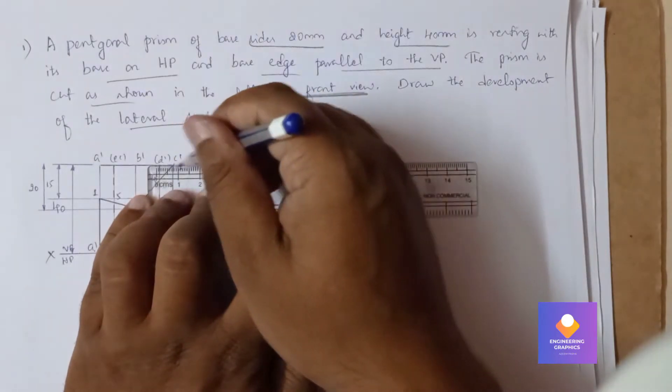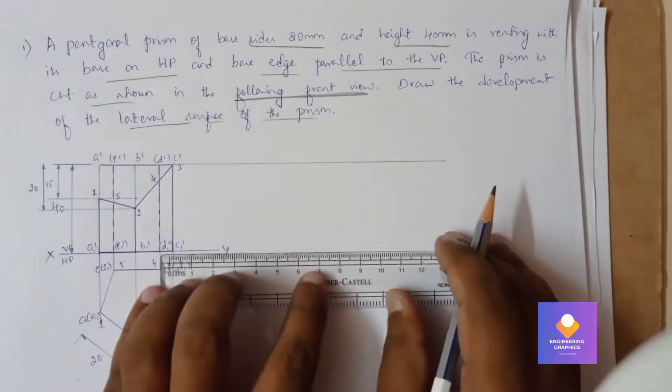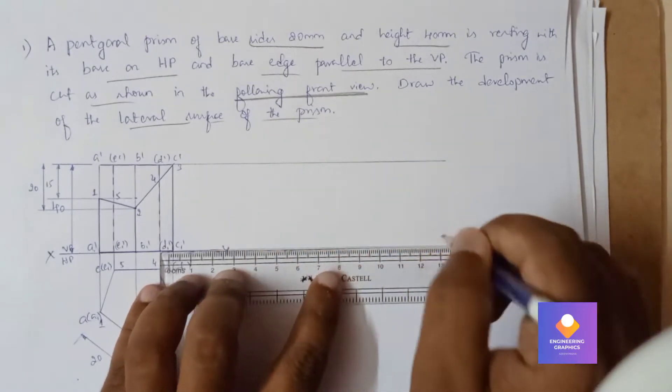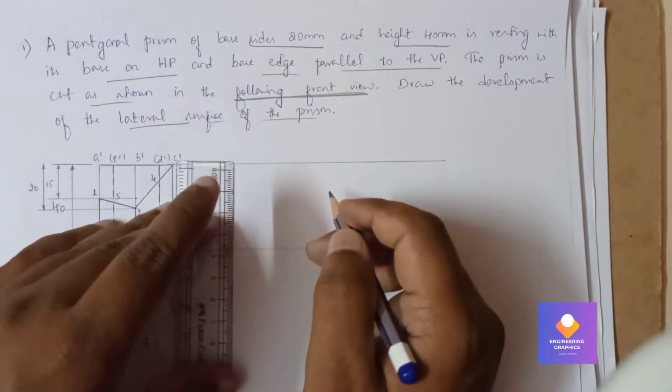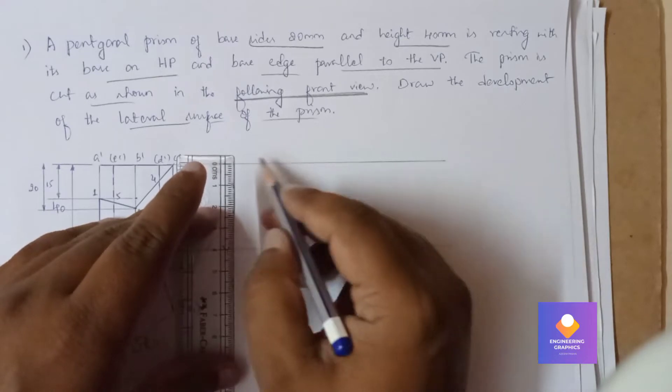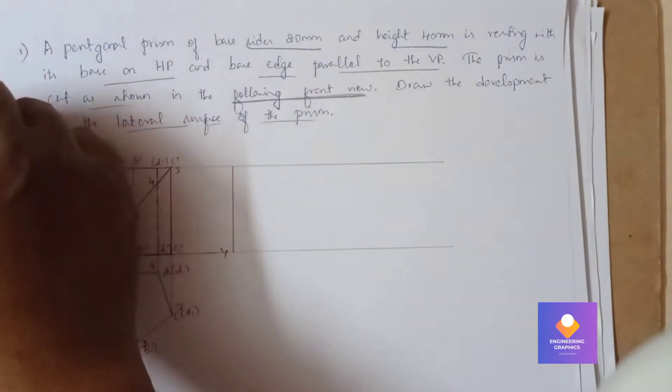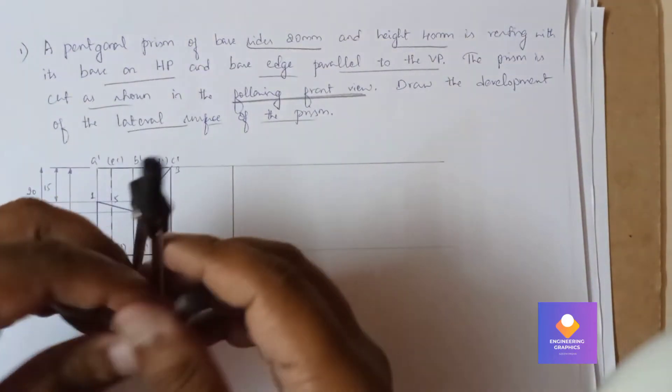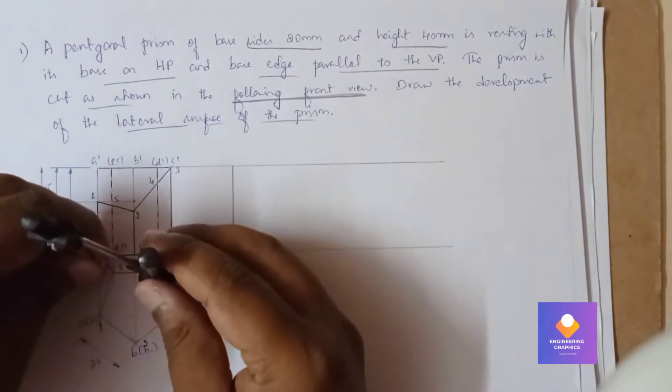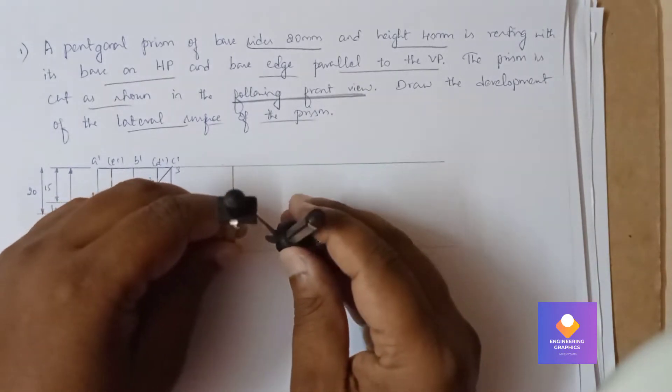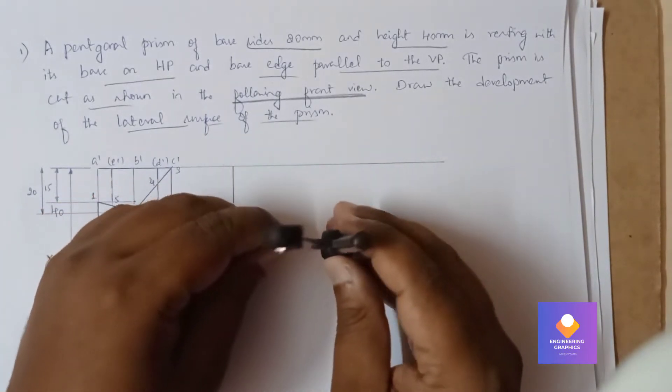It will be drawn with respect to the true length. Consider the reference line first. Now take a compass and measure 20mm, any one of the sides you can measure of the pentagon. So cut five arcs because it is a pentagonal prism.